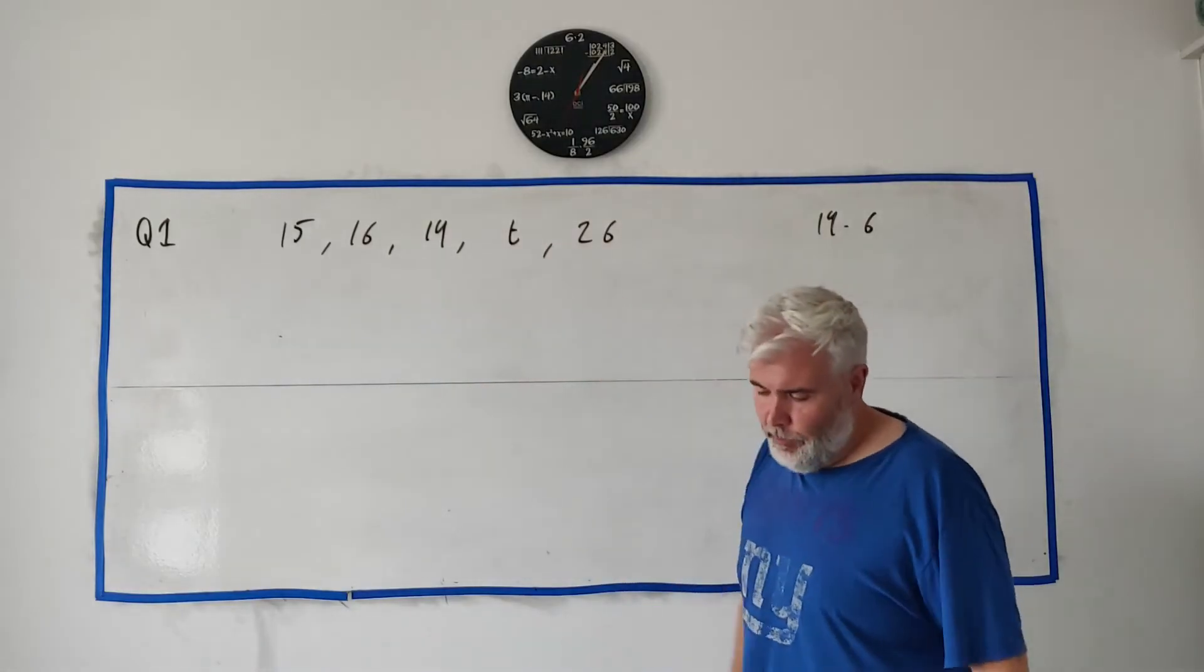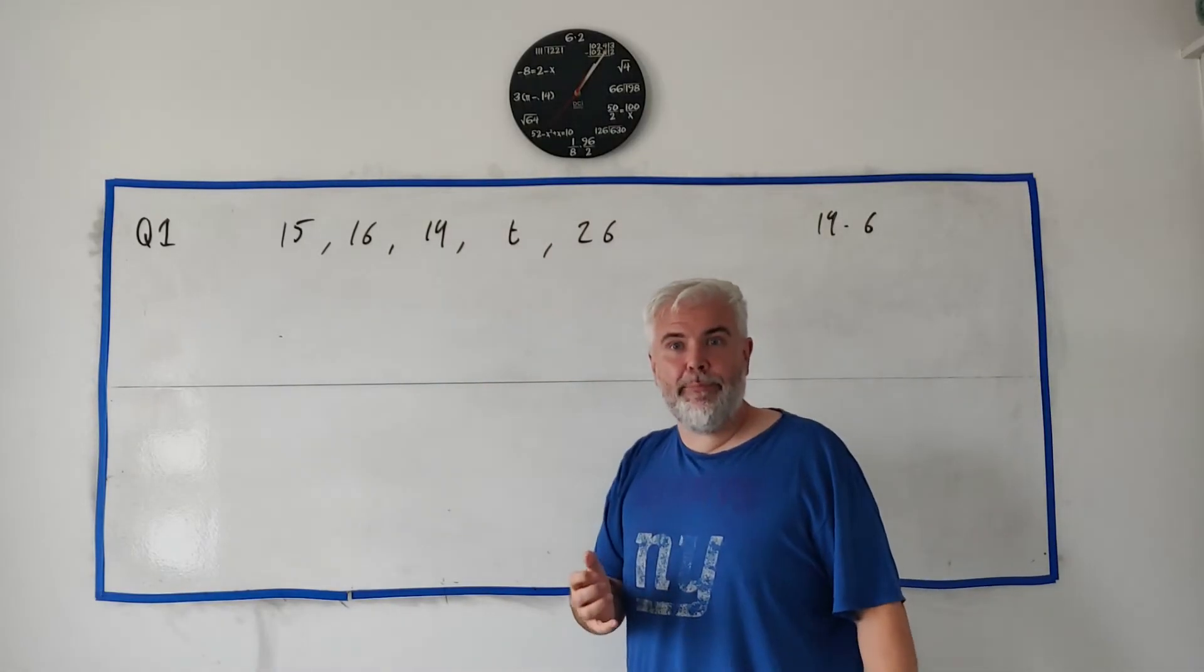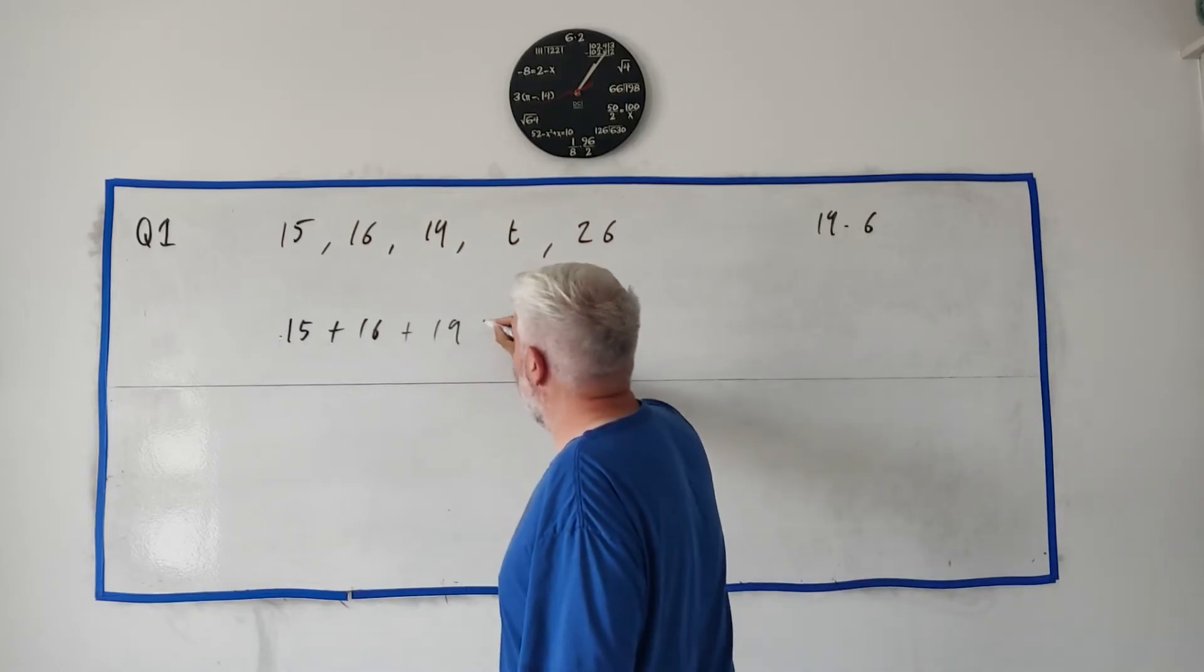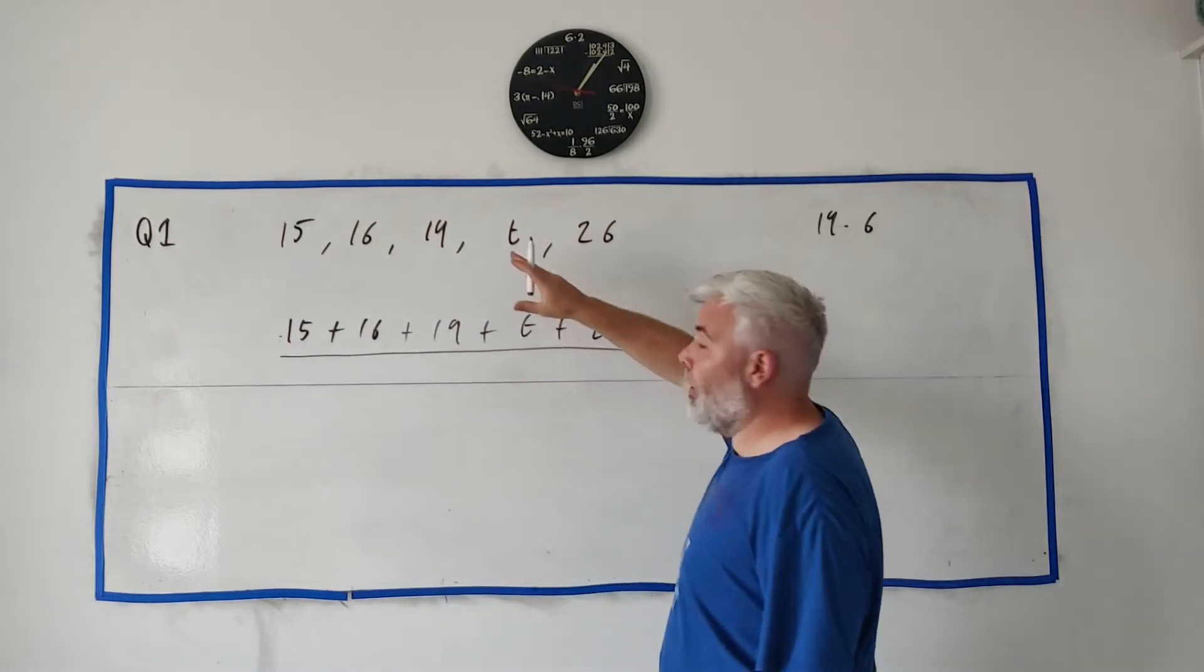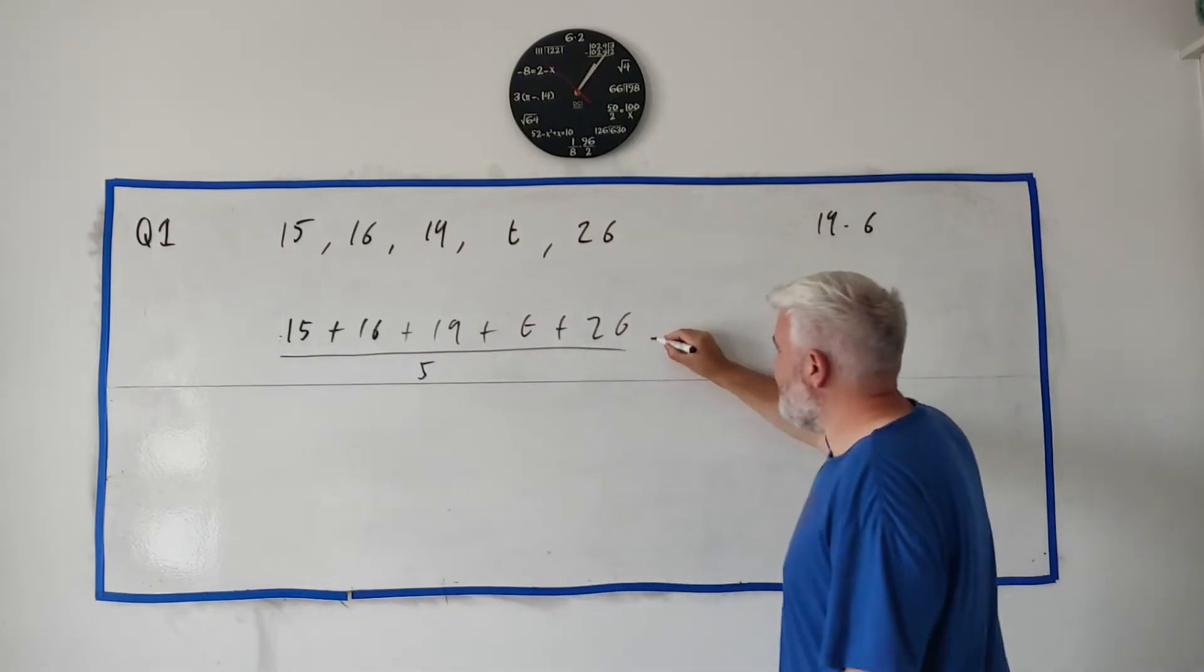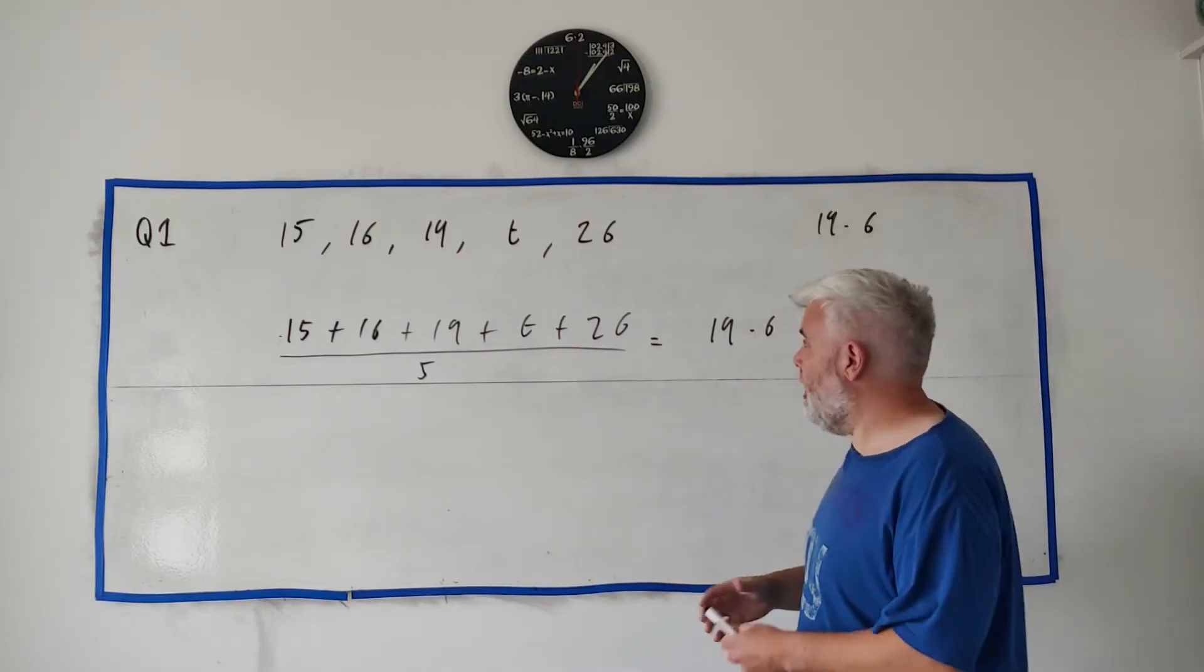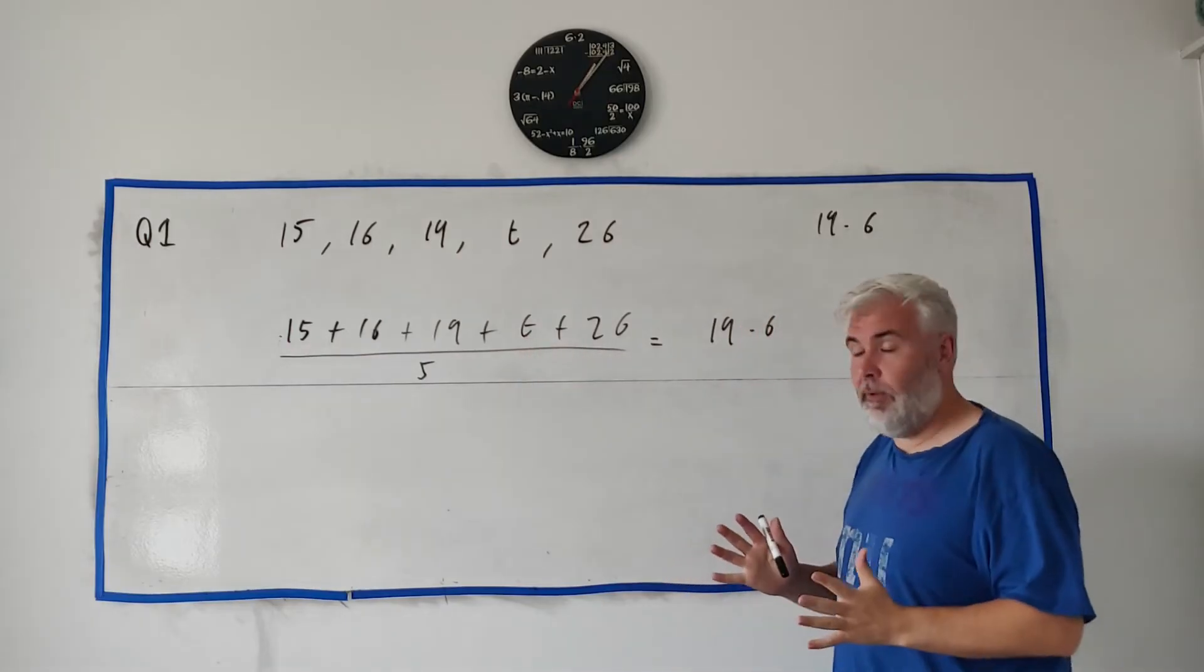One thing to do is just guess some numbers. That's a terrible way to do it. But how do we find the mean? How do we find the mean of five numbers? We simply add them together. 15 plus 16 plus 19 plus T plus 26. And we divide them by how many numbers there are. So there's five numbers there divided by five. But in this case, we know what that answer is. We know it's 19.6. So this is just a maths question. If we look here, there's only one thing you don't know: T. So we should be able to solve this.